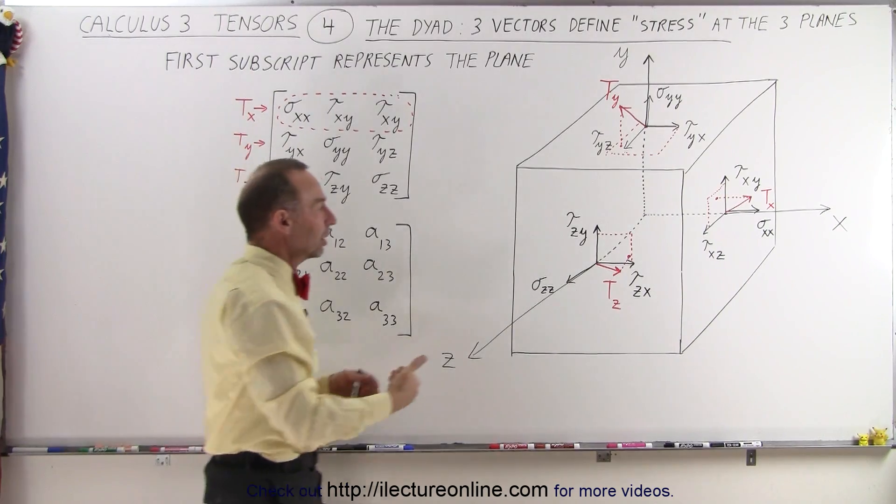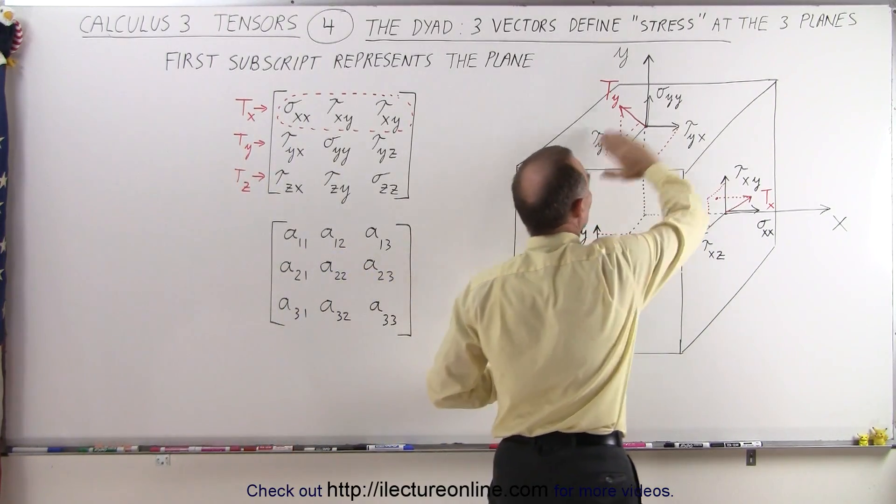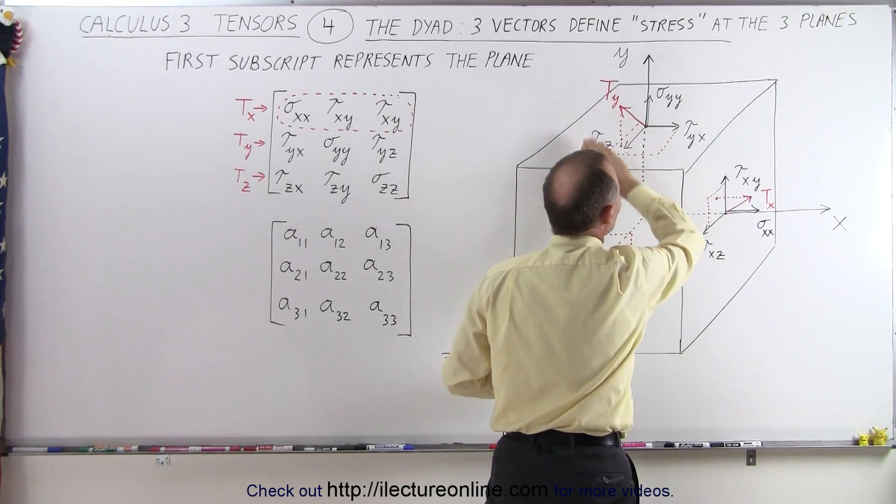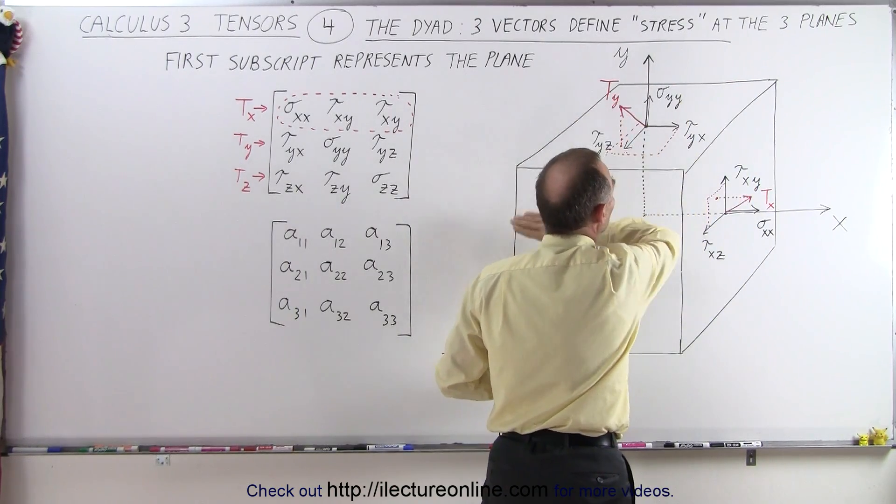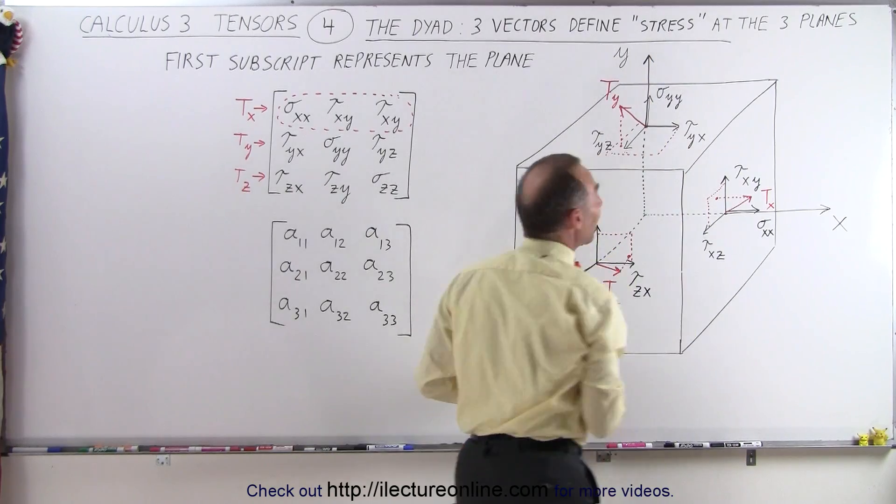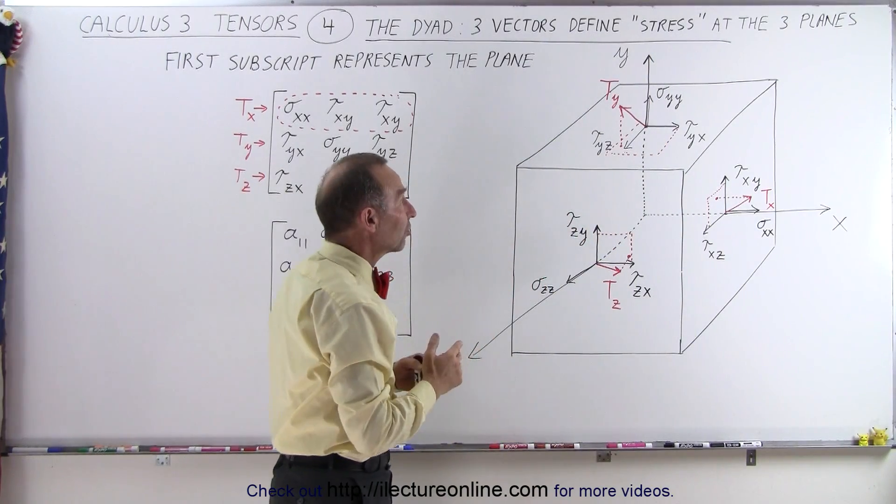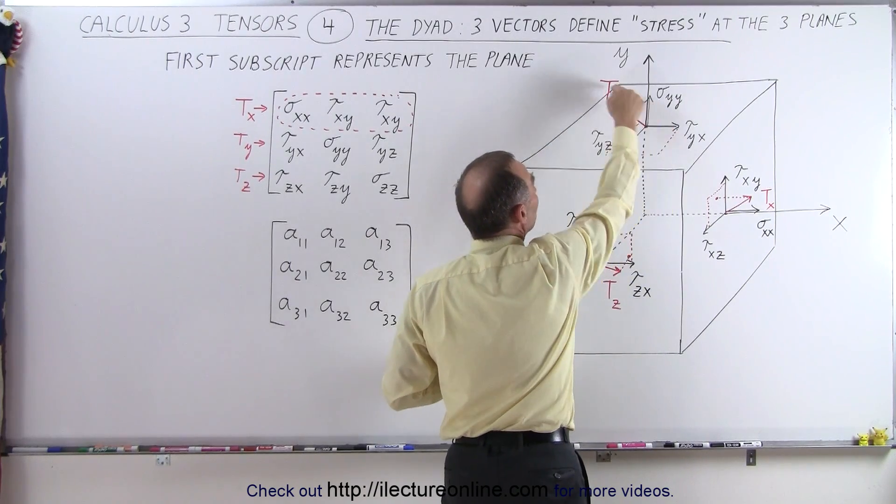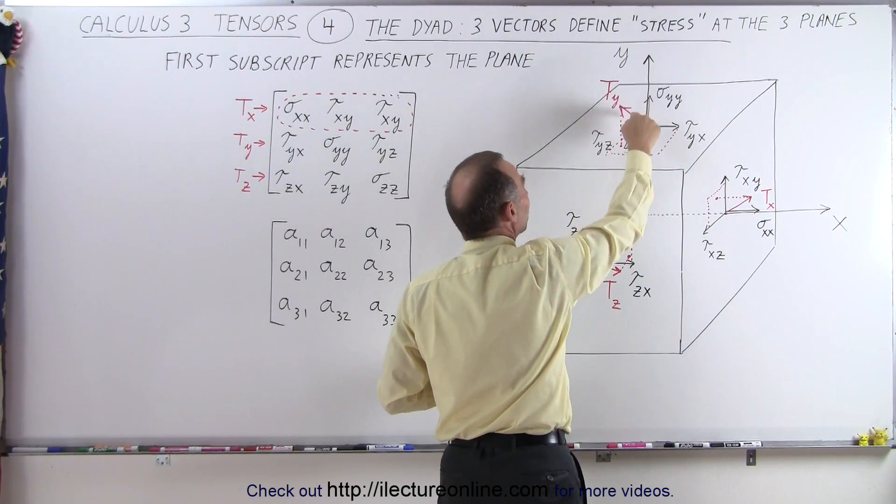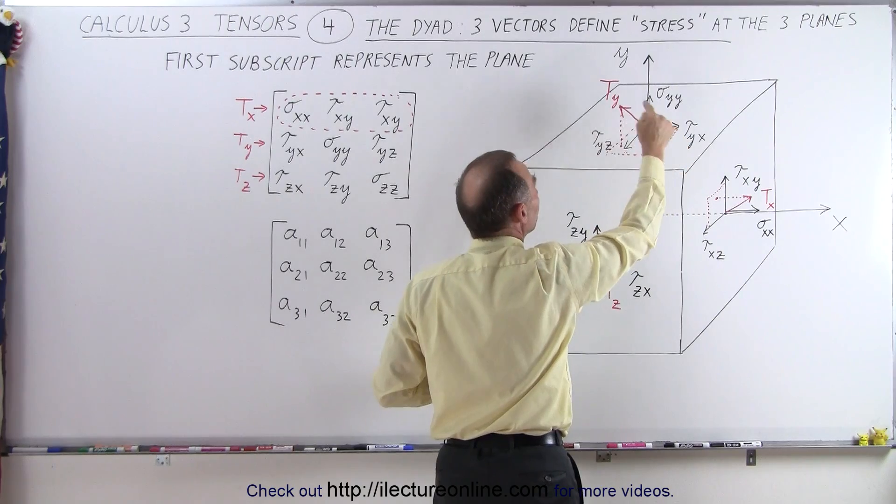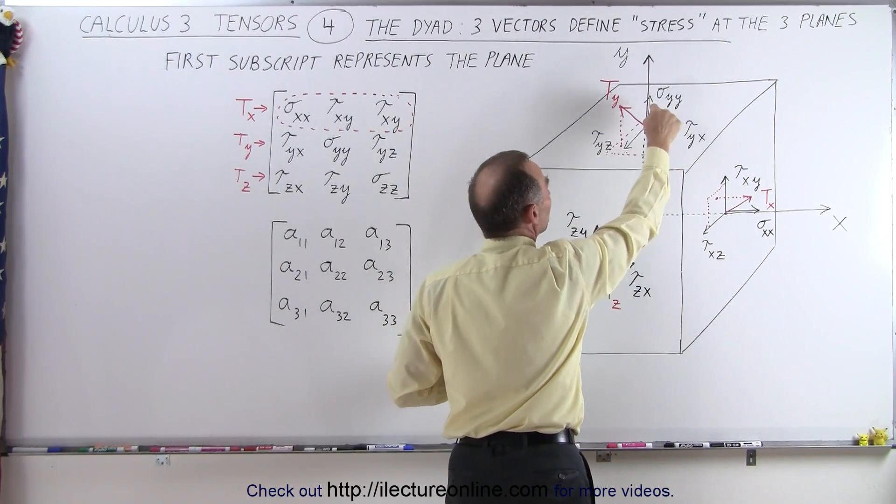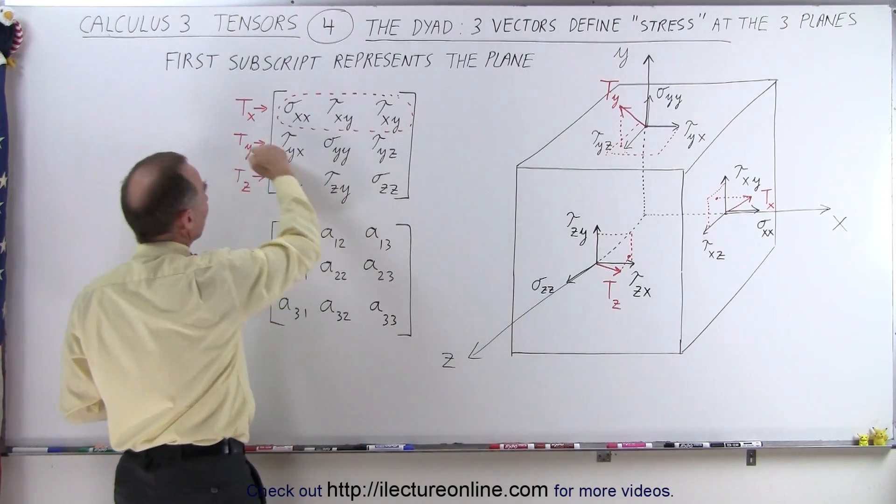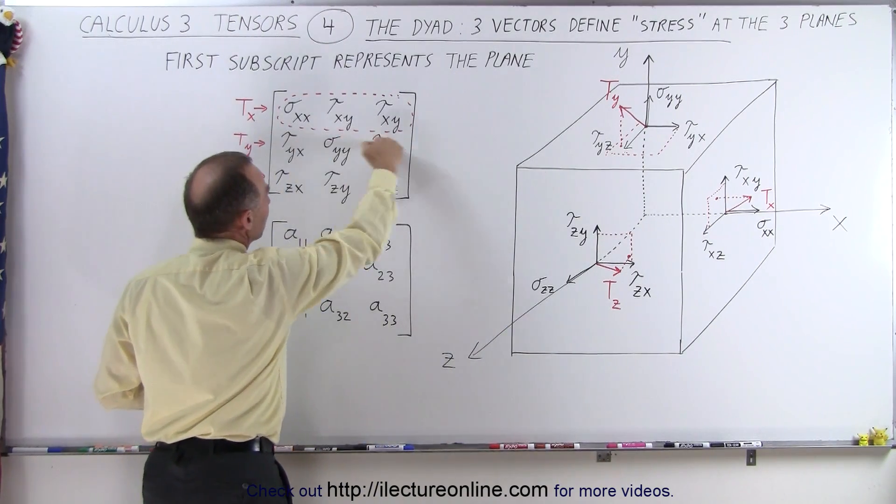When we cut the beam along this plane right here, this would then be what we call the z-x plane. It cuts across the y-axis perpendicular to the y-axis. The stress at that location is represented by this vector here, which is the sum of the three components: the component in the x direction, the component in the y direction, and the component in the z direction, represented by the next three components right here.